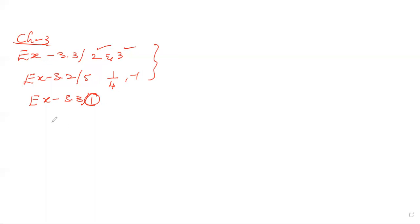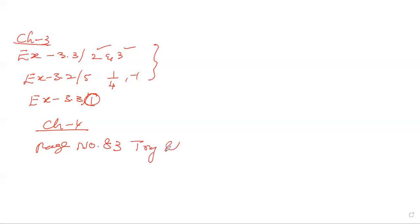Chapter 3 has 20 questions. Next preference is chapter number 4. Here, page number 83 — check page 83, try these problems and practice the sums. Finding the k value for intersecting lines, parallel lines, or coincident lines — find out the p value. This is what we are going to do in this example.